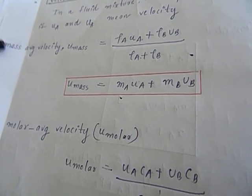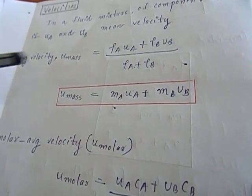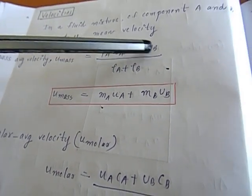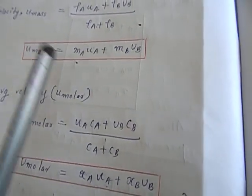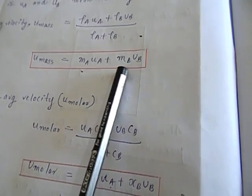Mass average velocity U_mass is equal to rho_A U_A plus rho_B U_B divided by rho_A plus rho_B. Then U_mass is equal to M_A U_A plus M_B U_B.